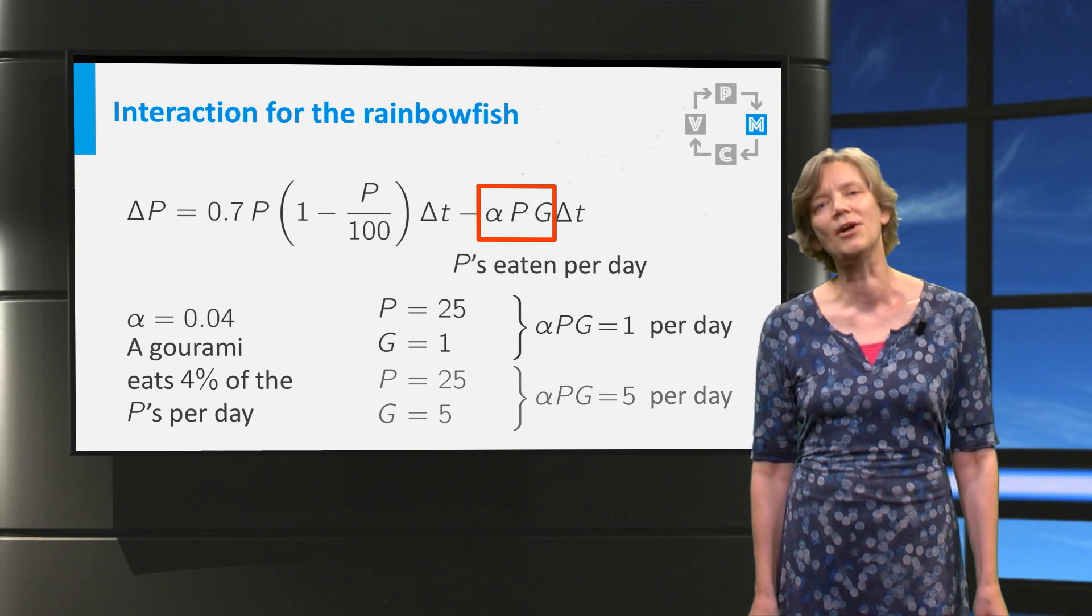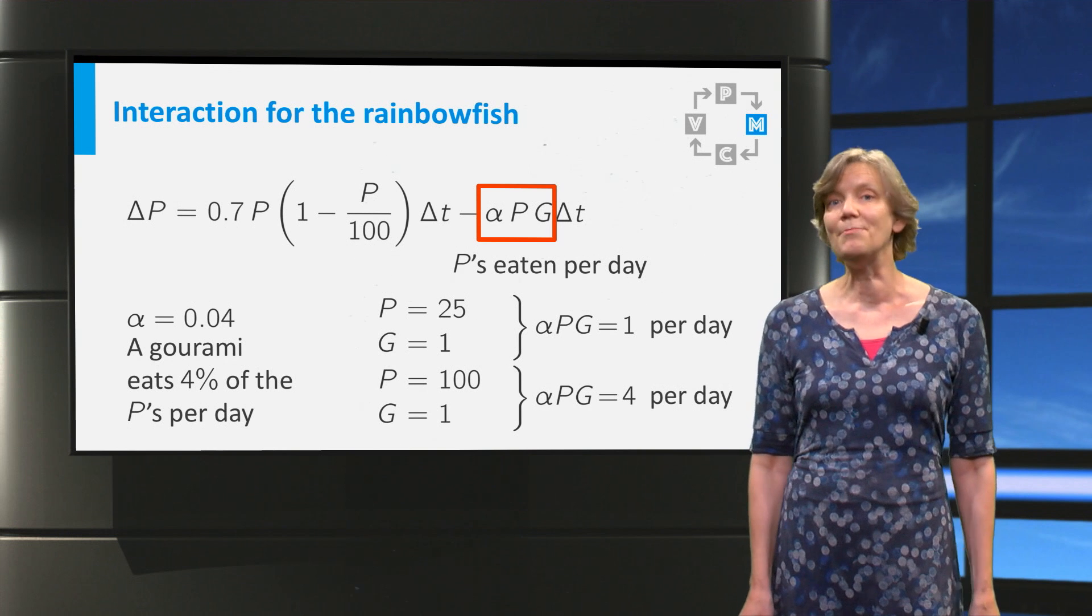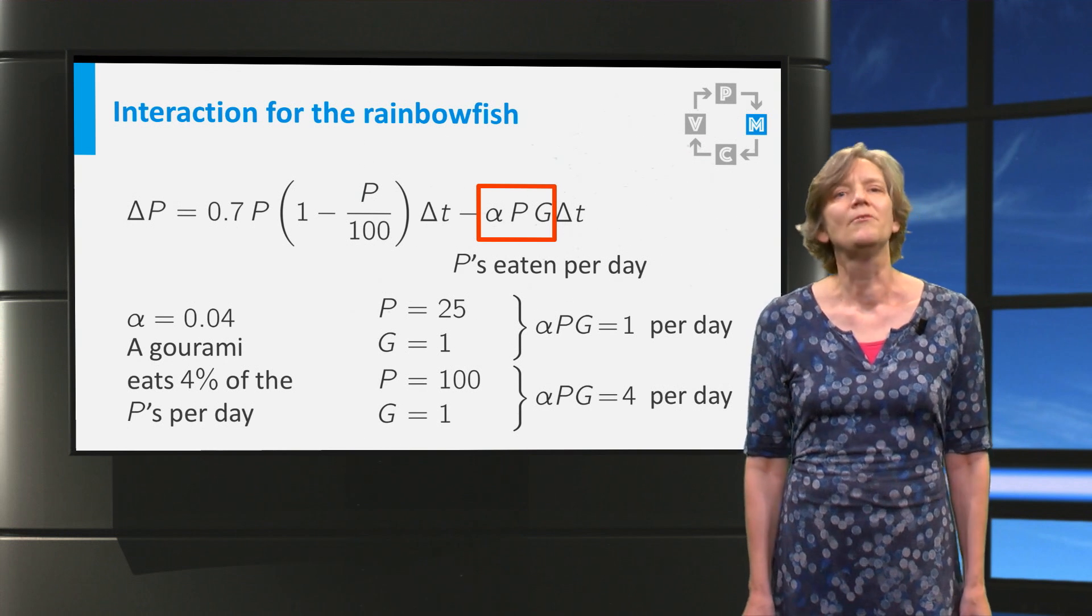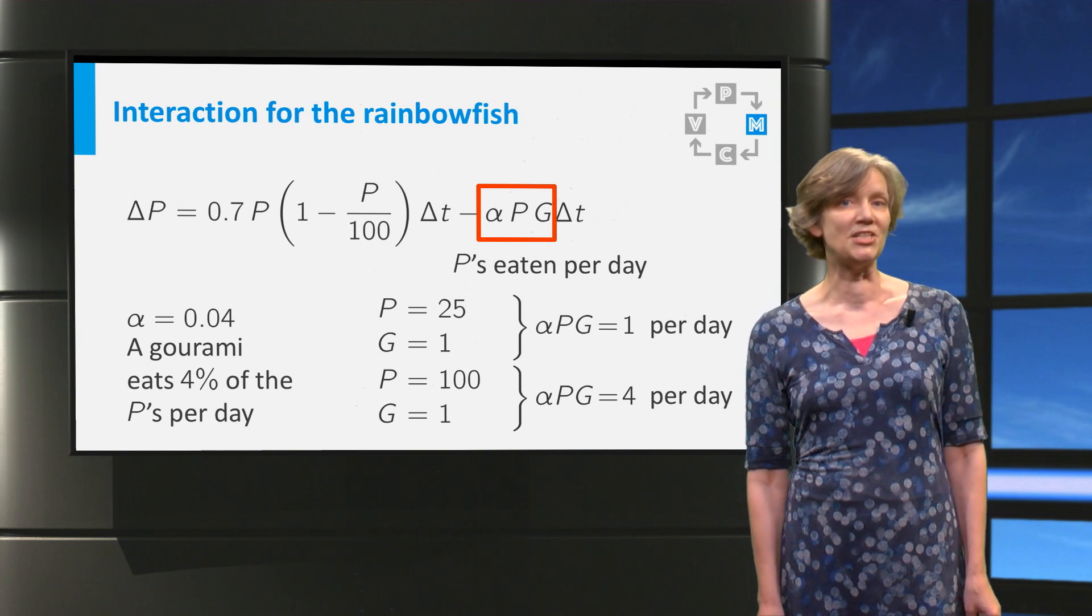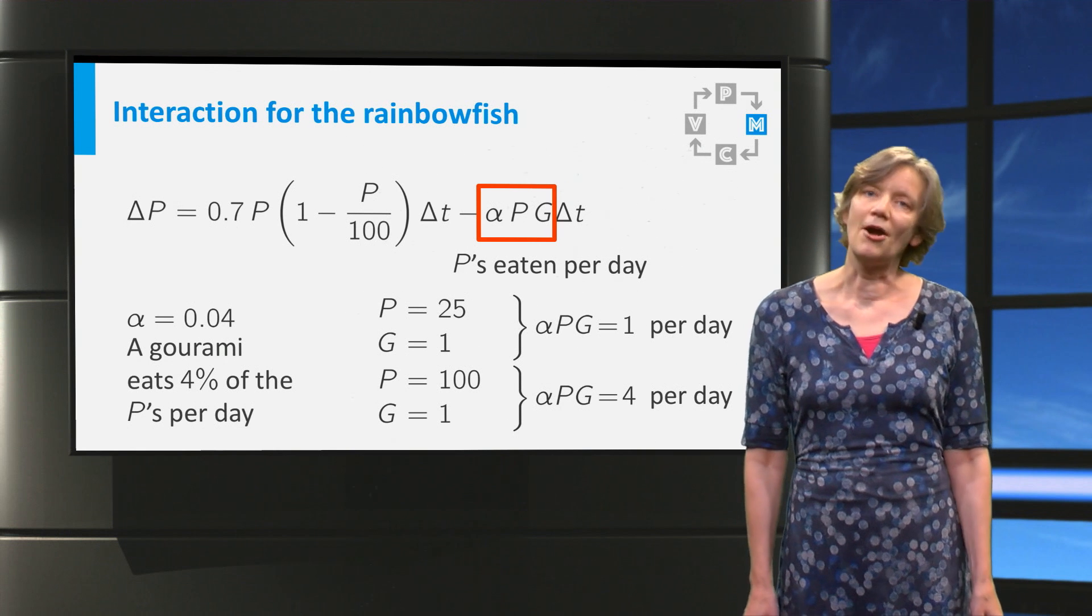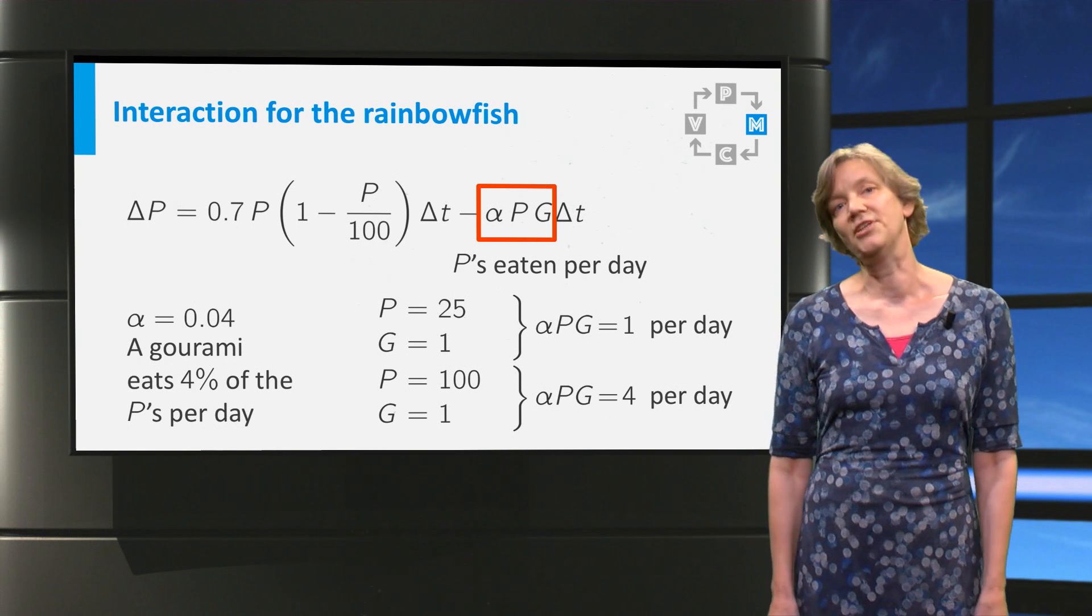Now back to 1 gourami. If we take 100 rainbow fish, the gourami supposedly gets more aggressive with all these rainbow fish invading its territory and the rainbow fish will be easier to catch. So the gourami now eats 4 rainbow fish per day.